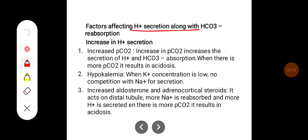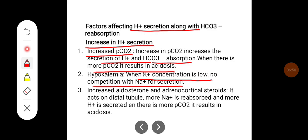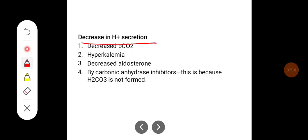Factors affecting H+ secretion along with bicarbonate reabsorption: factors that increase H+ secretion include increased partial pressure of CO2 (pCO2), which increases H+ secretion and bicarbonate absorption — when there is more pCO2 it results in acidosis. Hypokalemia: when potassium concentration is low, there is no competition with sodium for secretion. Increased aldosterone and adrenocorticosteroids act on the distal tubule — more sodium is reabsorbed and more hydrogen is secreted, resulting in acidosis. Decreased H+ secretion occurs due to decreased pCO2, hyperkalemia, decreased aldosterone, and carbonic anhydrase inhibitors, because bicarbonate is not formed at all.